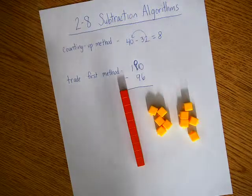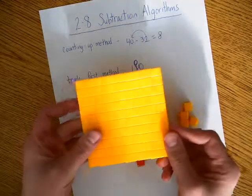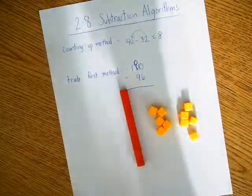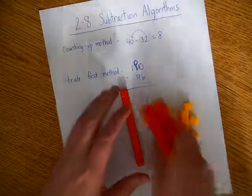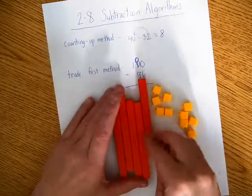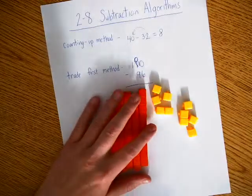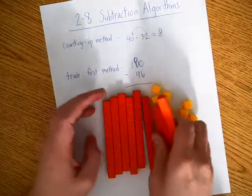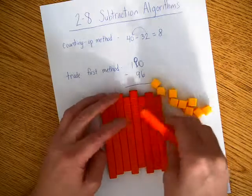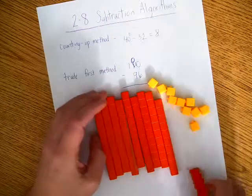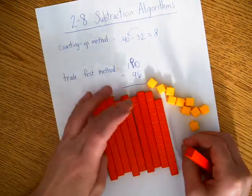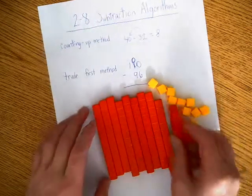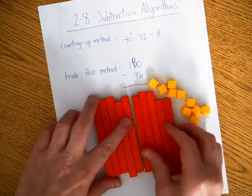So I'm going to take this 100 and I'm going to trade it in for 10 longs. 1, 2, 3, 4, 5, 6, 7, 8, 9, 10.